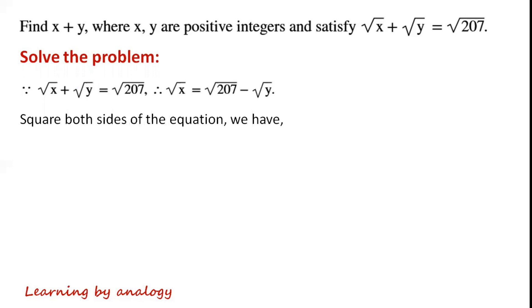By squaring both sides of the equation, we have x = 207 + y - 2√(207y). Since √207 = 3√23, this gives x = 207 + y - 6√(23y).